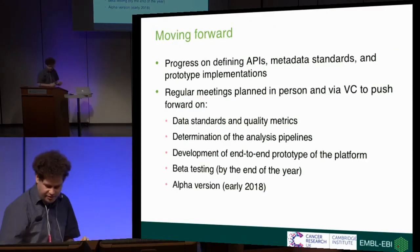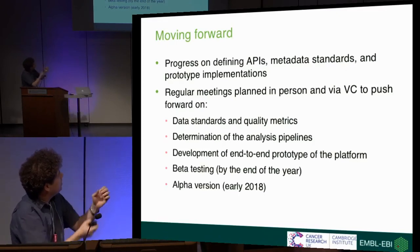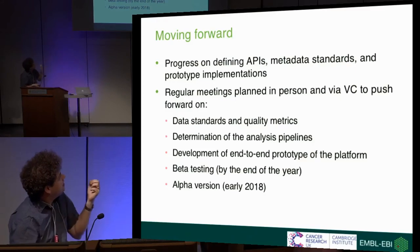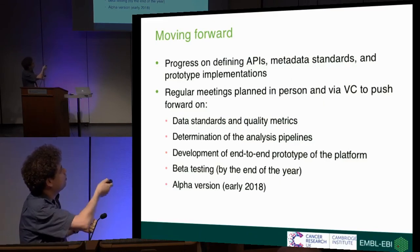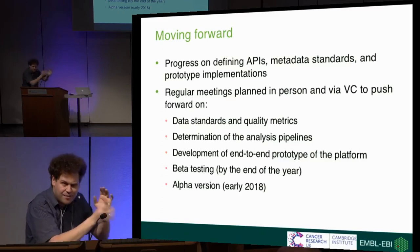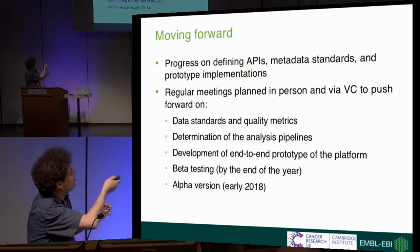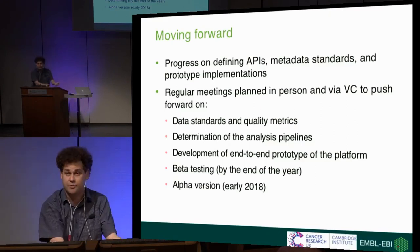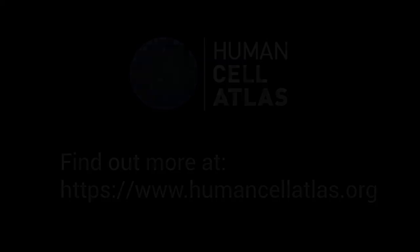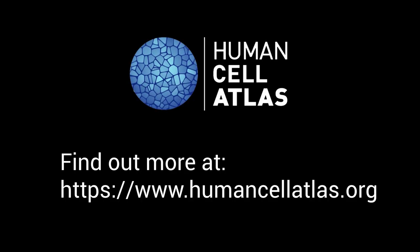Where are we at the moment? We've made very good progress in the last six months. We have focused, particularly at various meetings, on defining APIs, metadata standards, and implementation of prototypes. Via both in-person and video conference meetings, we've made really good progress on data standards and quality metrics. We have a beta or gamma version of the analysis pipeline. We hope to develop an end-to-end prototype of the platform by the end of this year, suitable for beta testing. We anticipate that early next year, we'll have an alpha version of this pipeline, at least for single-cell RNA sequencing data, that will be accessible to the whole community, thereby allowing the data to be shared across the entire scientific community. Thank you.